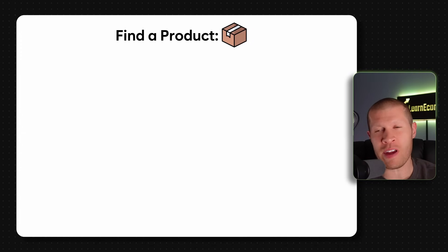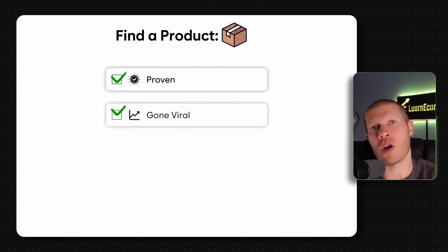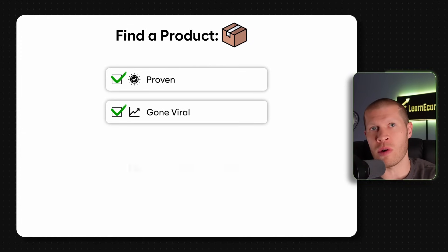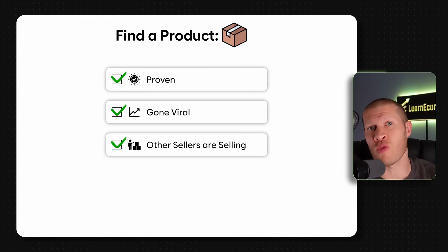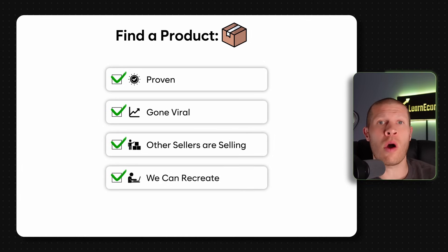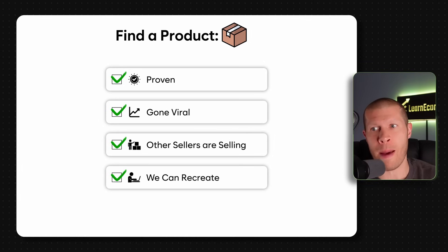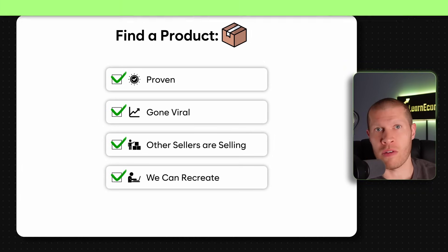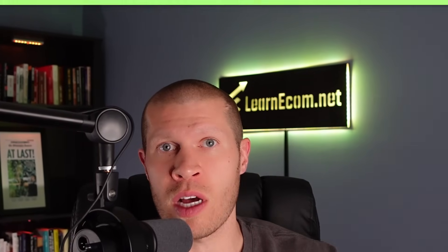The first thing we need to do is figure out a product that's proven, that's already gone viral, that other people are currently having success with, so that we can also create videos and siphon off a piece of that pie to get some sales ourselves. We're using Creatify AI because it's really easy to get a lot of videos up and make them as high quality as possible.